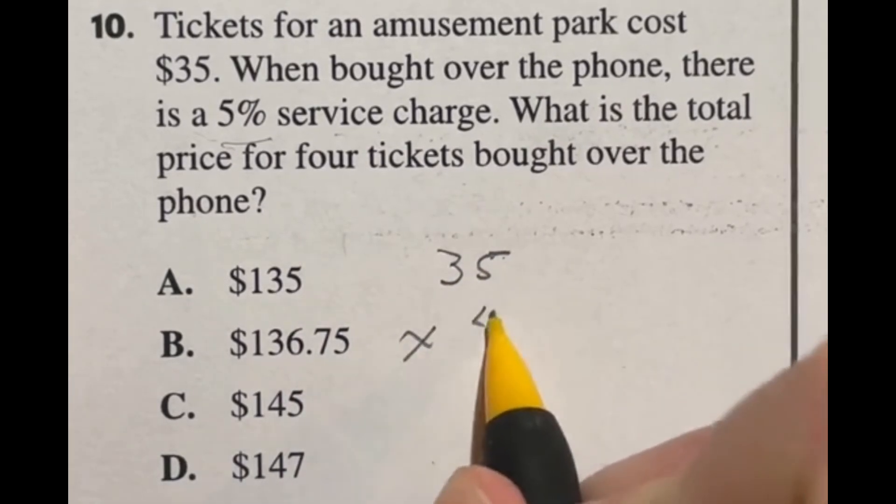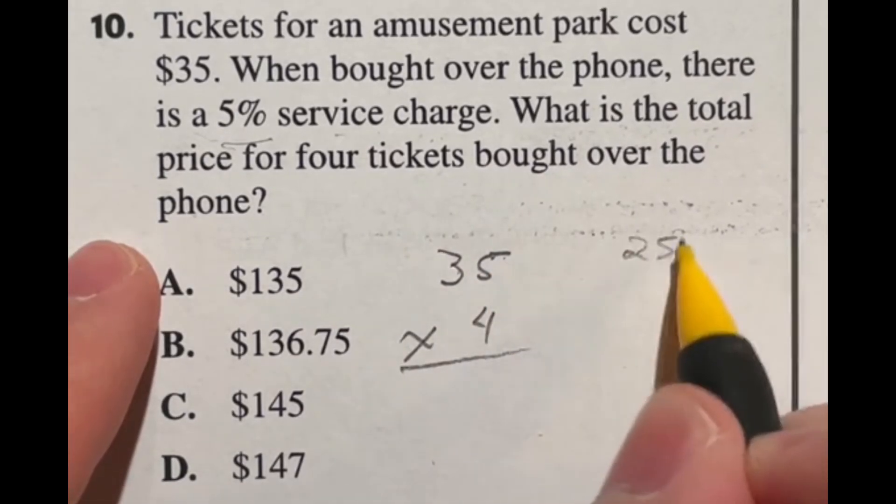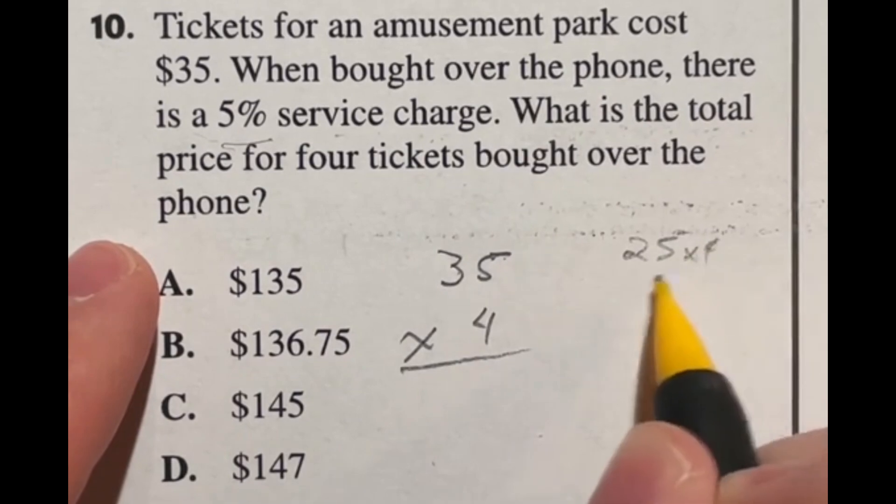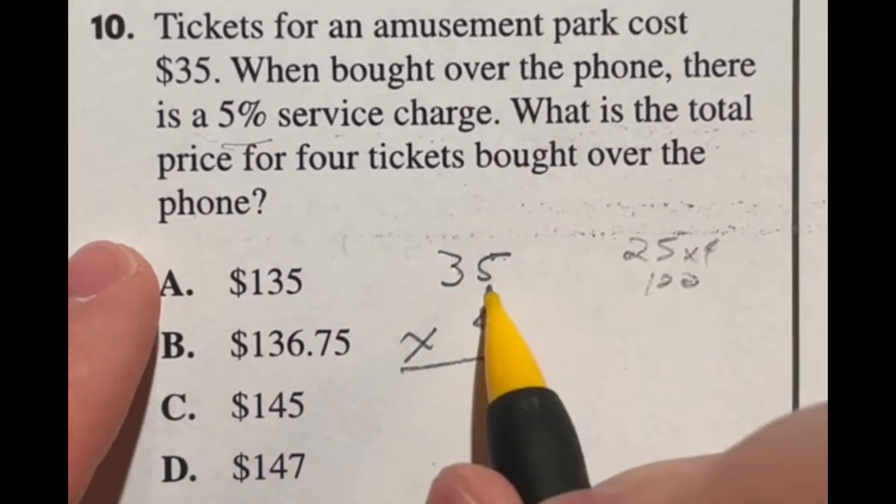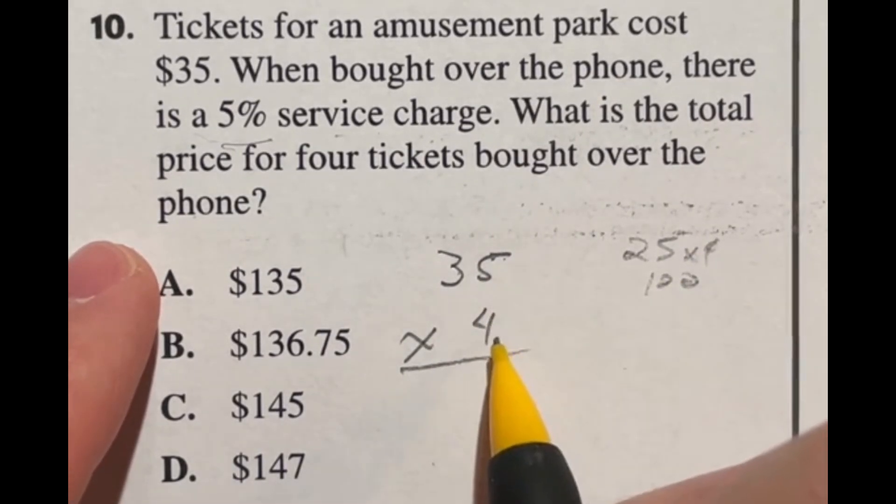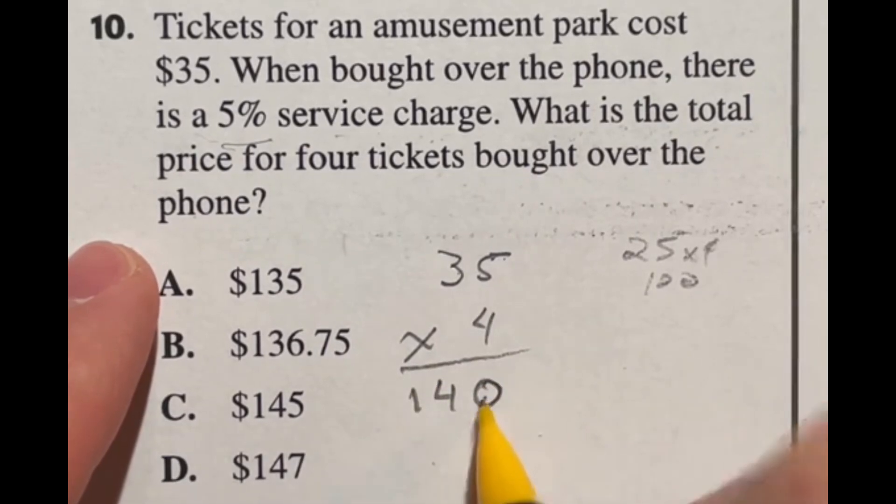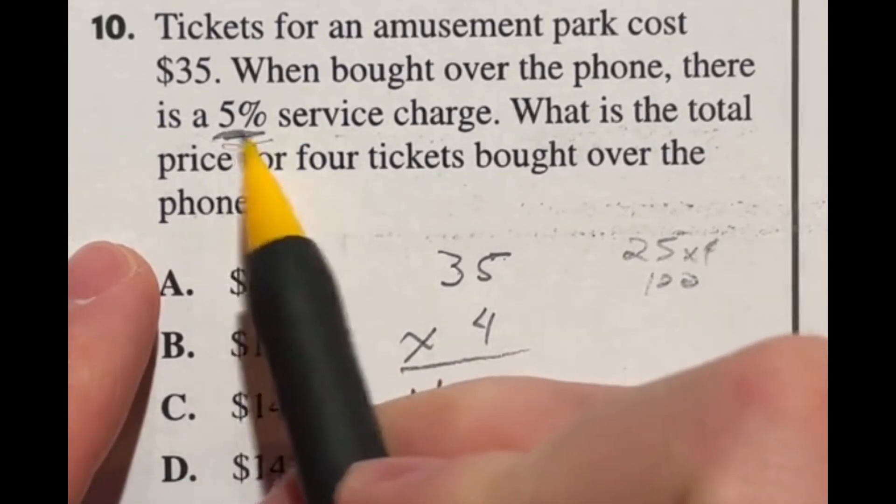Now there's lots of ways to do this. You could do it all in your head. In my mind, I know that 25 times four is an easy 100. So I'm going to say that's 100. And then I have 10 more each time. So that's a total of 140. Now we have to go back and deal with this 5% rule.